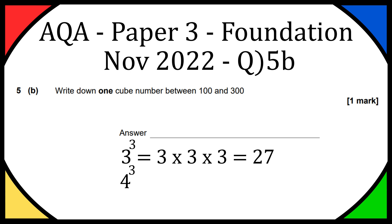Let's try 4 cubed and see if we can get another cube number between 100 and 300. So next one would be 4 times 4 times 4, which is 64. So 64 is a cube number, but it's not between 100 and 300.